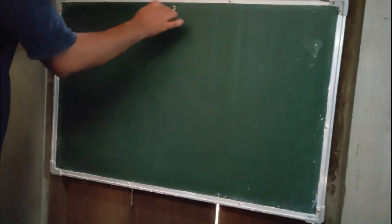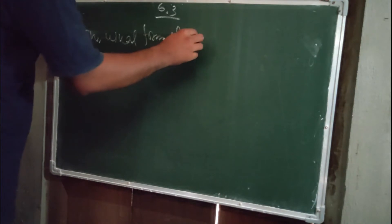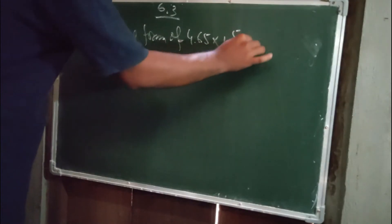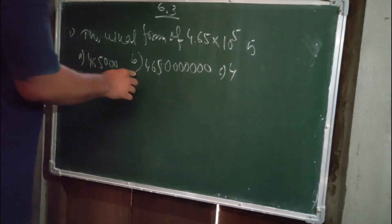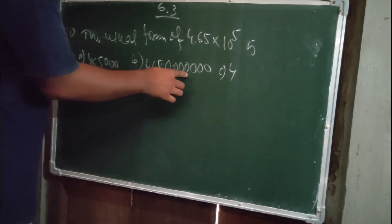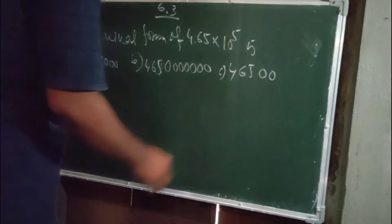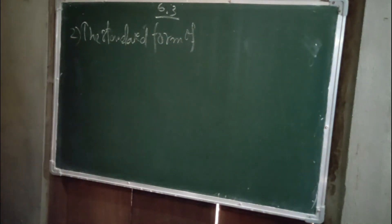Now I am going to discuss Exercise 6.3. The first multiple choice question: the usual form of 4.65 into 10 to the power 5 is what? Option A is 465,000, option B is 4,650,000, and option C is 4,650,000,000. Our answer will be option A.